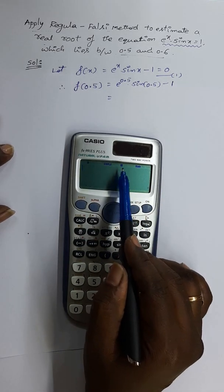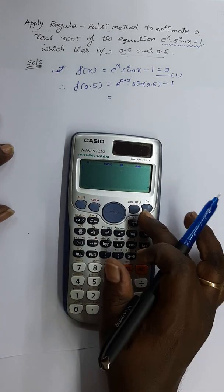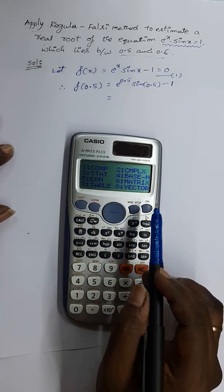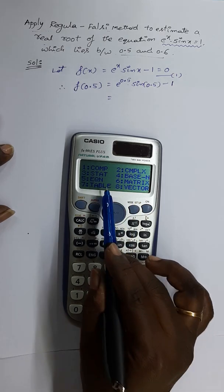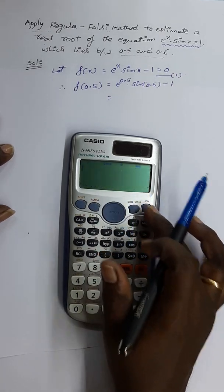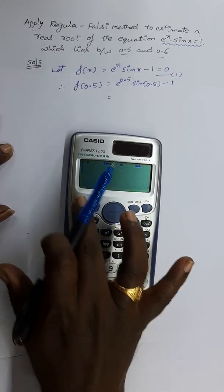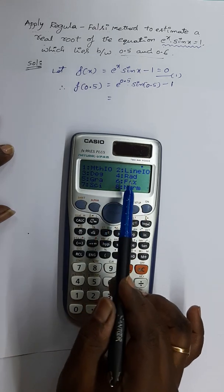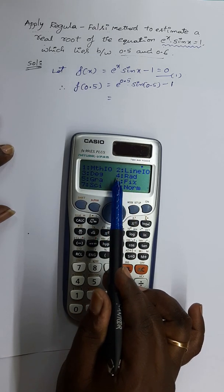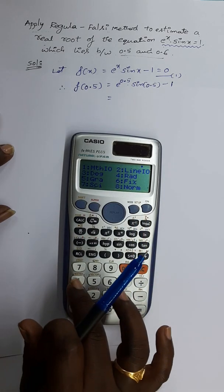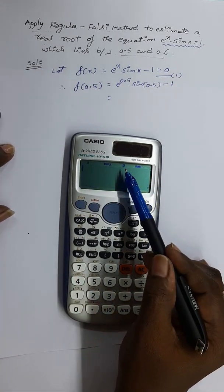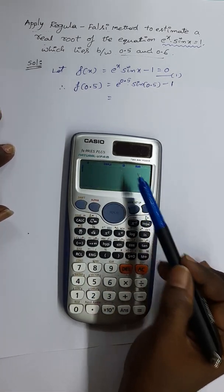Here the calculator is in degree mode. So operate mode — use Shift + Mode and look at the options. In the fourth option, we have the radians mode. So operate 4. Now we have set the scientific calculator to radians mode.